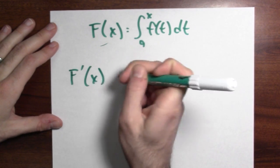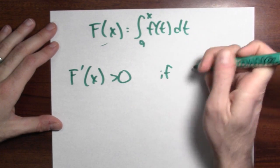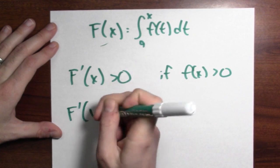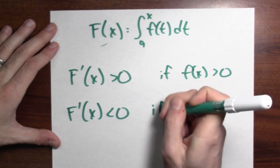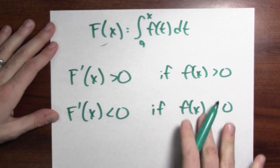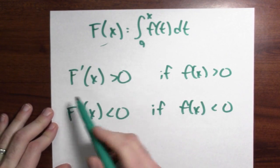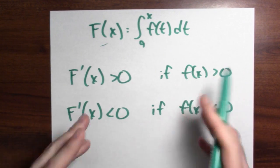Well, the accumulation function is increasing, meaning its derivative is positive, if the function that I'm integrating is positive. And the derivative is negative if the function that I'm integrating is negative. This suggests that the derivative of the accumulation function and the function that I'm integrating might be related in some way.